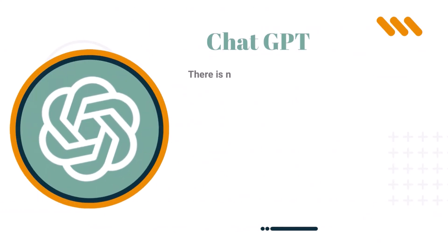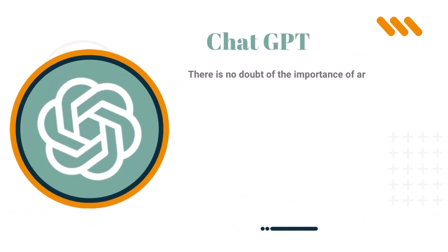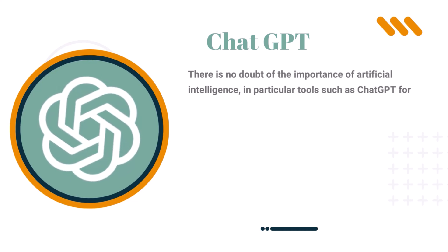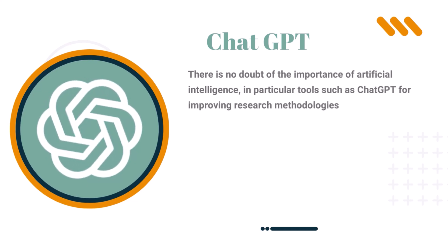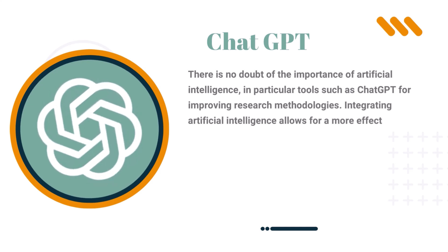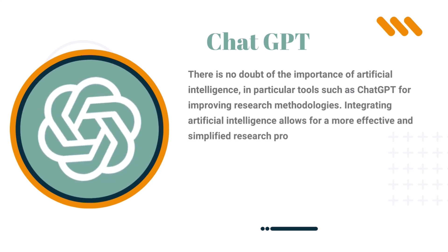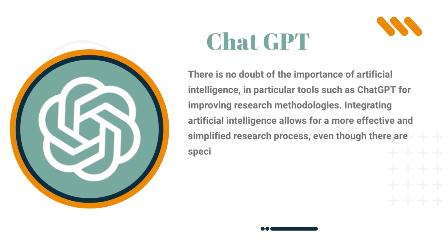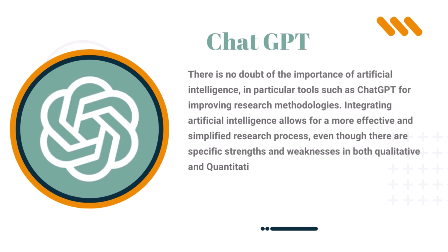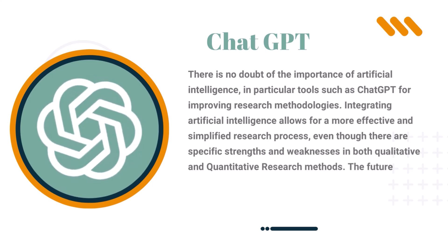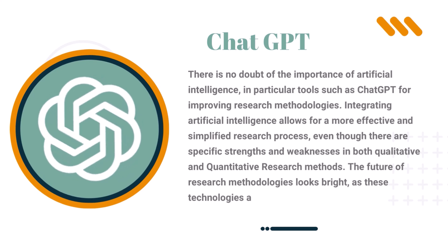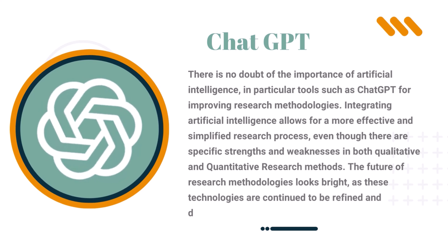There is no doubt of the importance of artificial intelligence, in particular tools such as ChatGPT, for improving research methodologies. Integrating artificial intelligence allows for a more effective and simplified research process, even though there are specific strengths and weaknesses in both qualitative and quantitative research methods. The future of research methodologies looks bright as these technologies continue to be refined and developed.